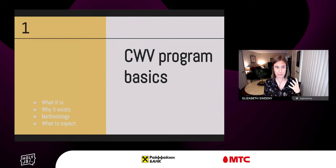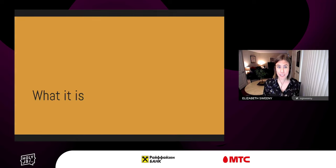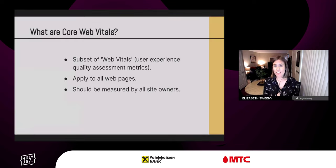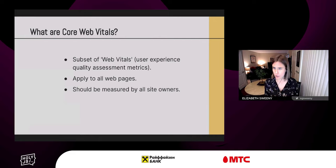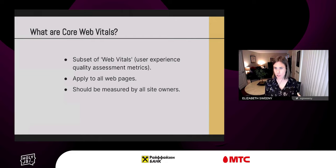With Core Web Vitals program basics, I want to go over what it is, why it exists, some basic methodology, and what to expect from the program. So what is Core Web Vitals? They are a set of quality dimensions, user-centric metrics, and thresholds that apply to all pages across all industry verticals and types of experiences. They are ultimately signals to developers and business stakeholders about the basic health of your site, and they should be measured by everybody.